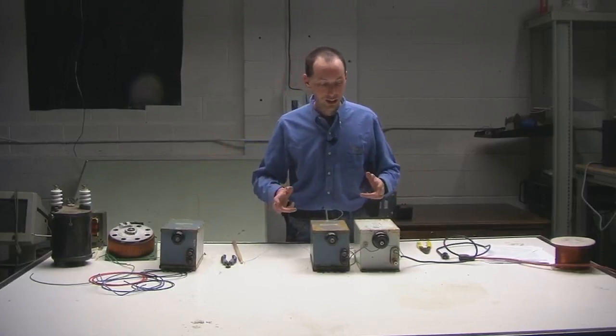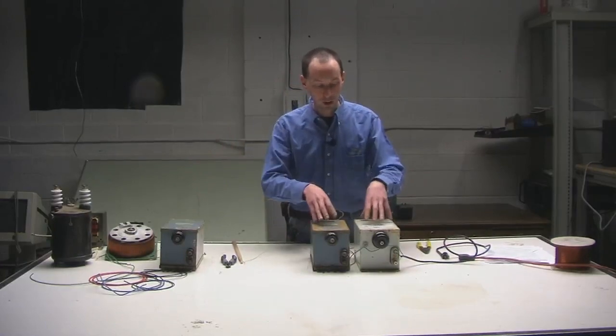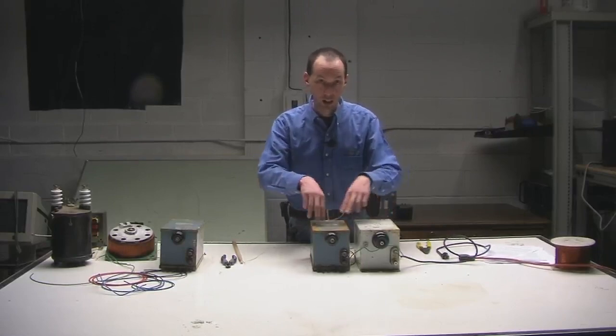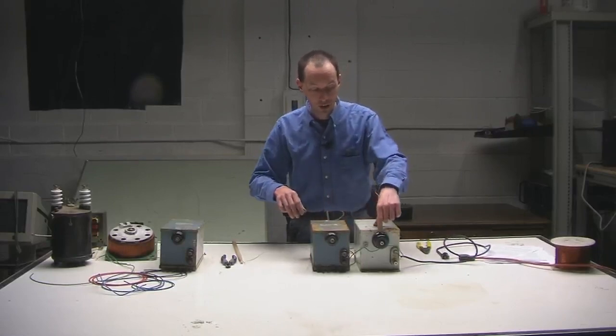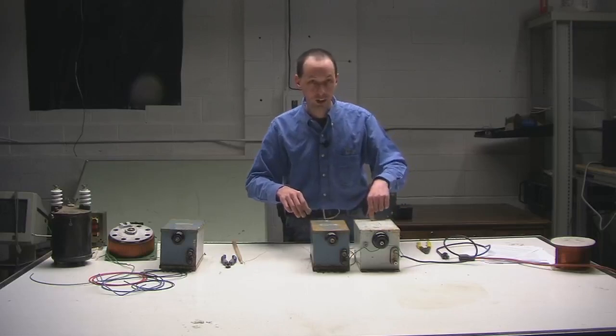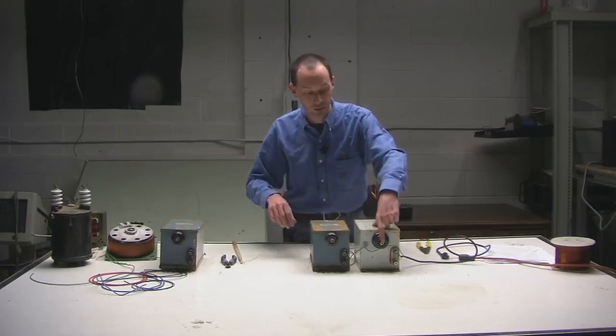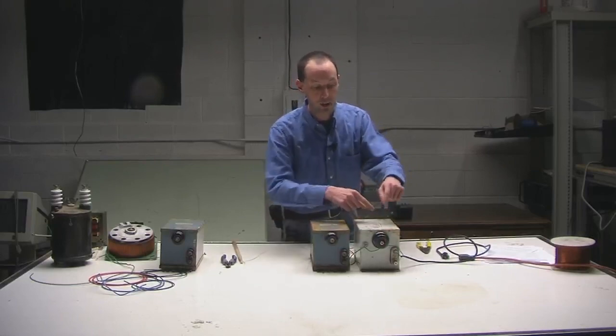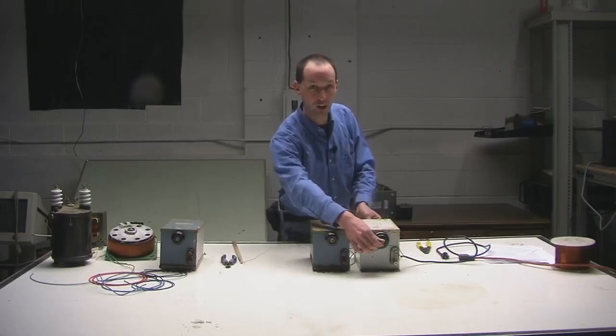So the way to do this is you have to understand what you have here is actually four transformers. You've got a primary winding and a primary winding. Each one only has one. But you've got a secondary separate from the other side secondary. This is a 6,000 volt transformer. This is a 6,000 volt transformer. And they're both out of phase so that you get 12,000 volts across.